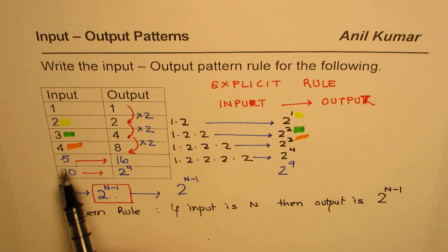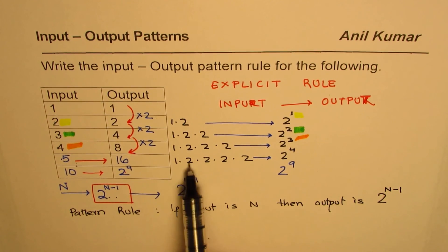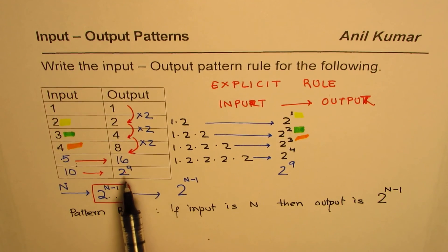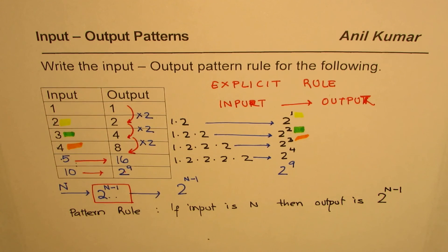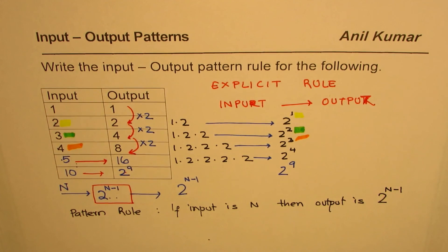So that is how it works. If the input is 5, the output is 2 times 2 times 2 times 2 — four 2s multiplied together, which is 2^4 = 16. If the input is 10, we multiply nine 2s together: 2 to the power of 9. I hope this helps you understand how to write a pattern rule for input-output questions. I'm Manil Kumar — feel free to subscribe, share my videos, and post questions if you need help. Thank you and all the best!